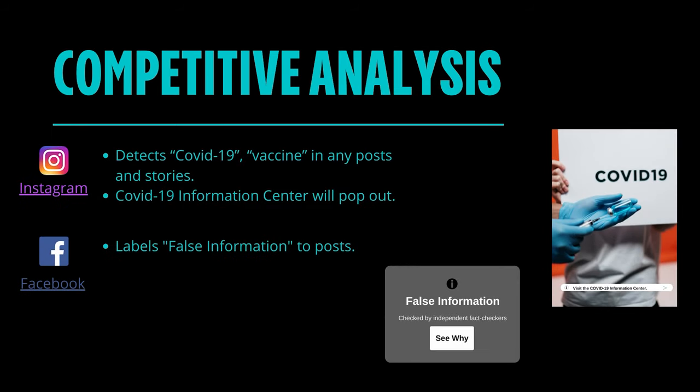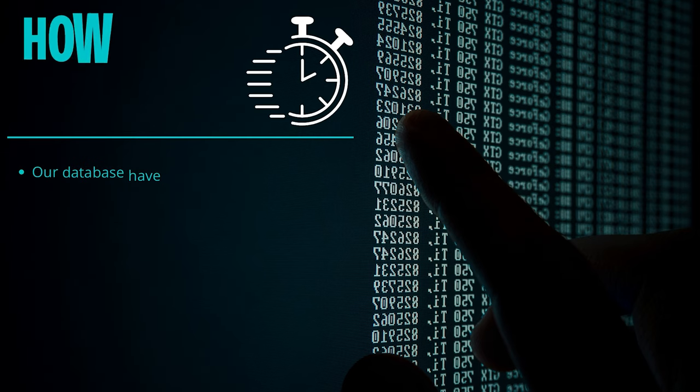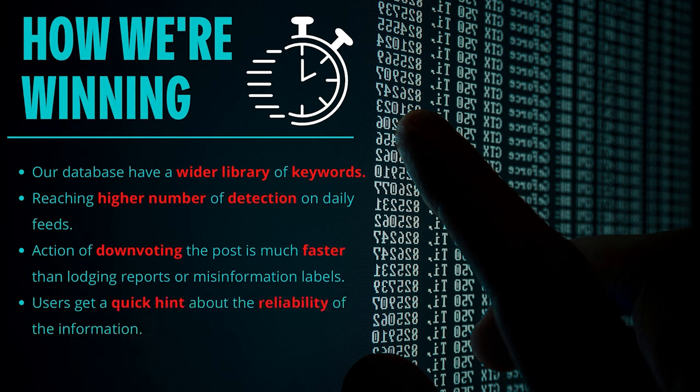What do we want to achieve with Factor? We are targeting social platform companies to incorporate Factor into their system so that all users have higher chances of avoiding misinformation. Instagram and Facebook also have features such as the COVID-19 Information Center and false information labels. However, Factor has a database containing more keywords related to misinformation. Besides that, downvoting is much easier and quicker than lodging a report. When you see that a post is severely downvoted, you get the idea that the information is most likely not reliable. All in all, Factor is much more efficient.